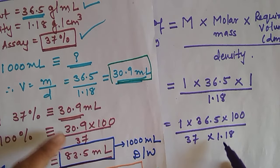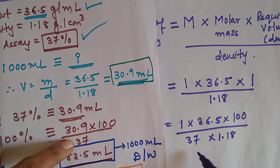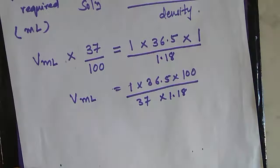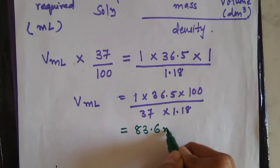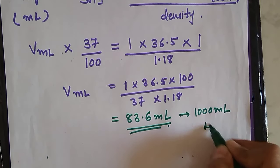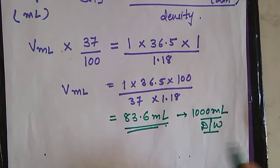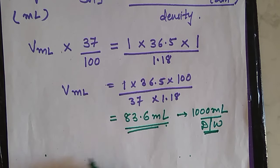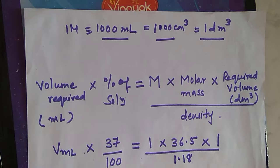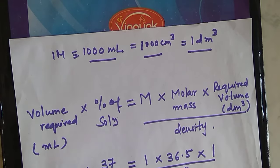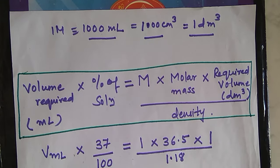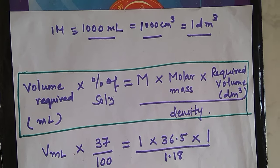So you get the answer directly in one step using this formula — on calculating you get the answer as approximately 83.6 ml. This much volume of HCl is to be dissolved in 1000 ml distilled water, meaning you add this concentrated HCl into 1000 ml of water taken in a volumetric flask, and you get 1 molar HCl. Either way you can proceed — the first method using two steps, or using this equation to directly calculate the volume required to prepare the given molar concentration of HCl. Thank you.